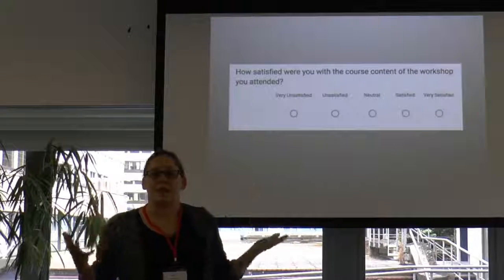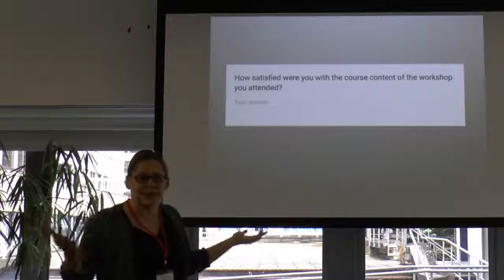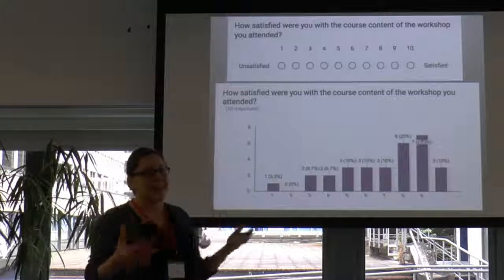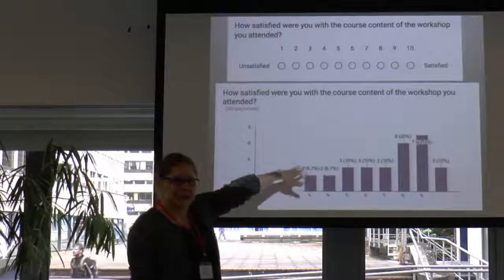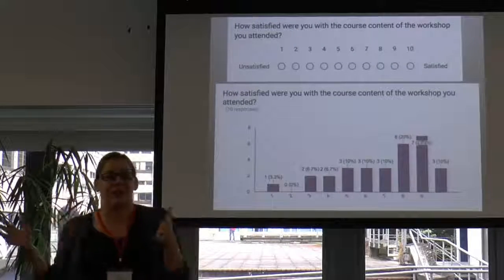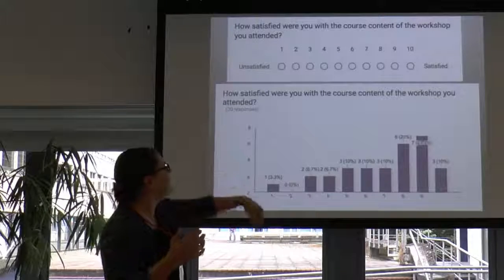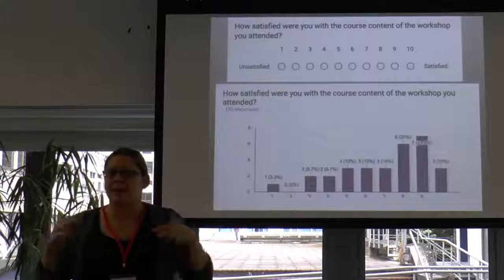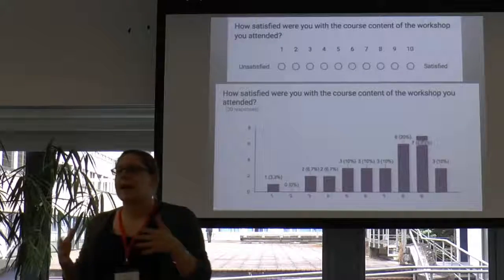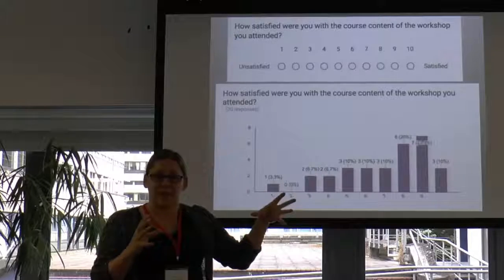This is called the Likert scale — I'm sure you've seen them. The data from a scalar gives us numbers we can use in various ways: we could get a mean or average, compare across time — we got a 7.3 this time and 7.2 next time — or compare categorical differences like men versus women. The numbers give us a lot of options to do this commensuration task.